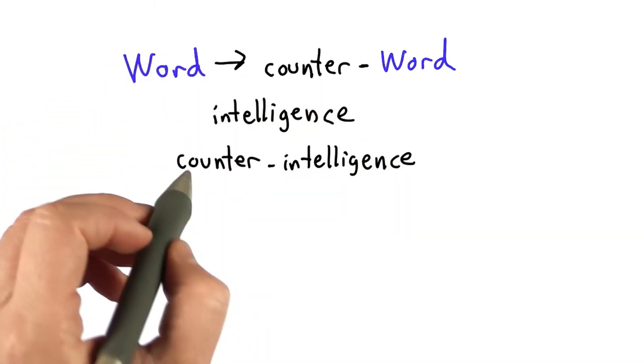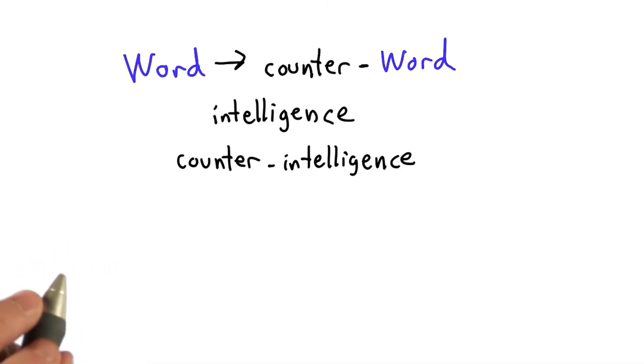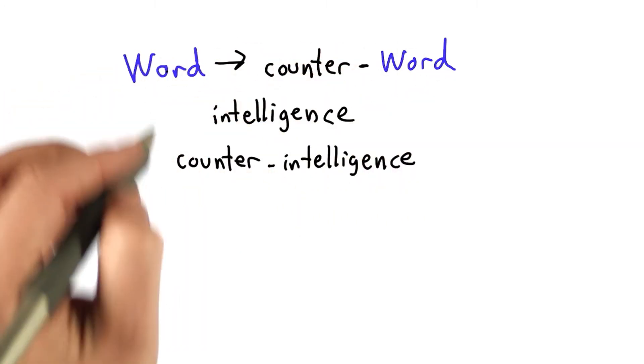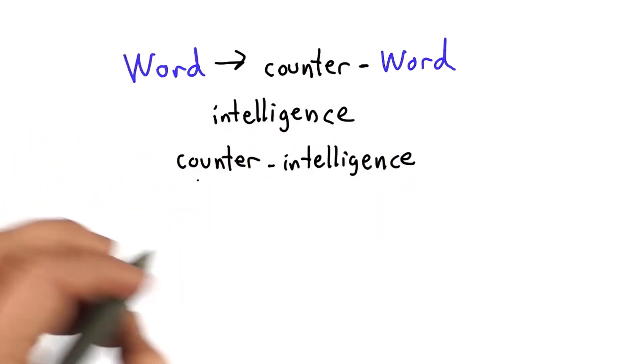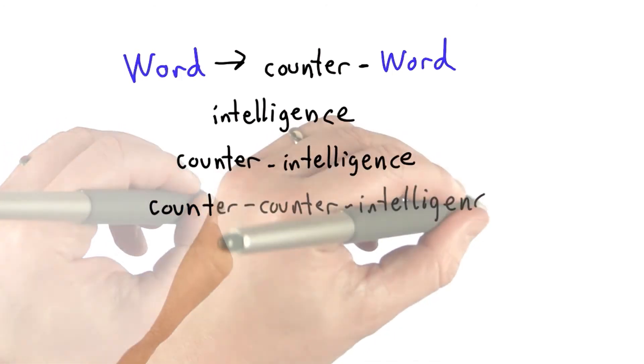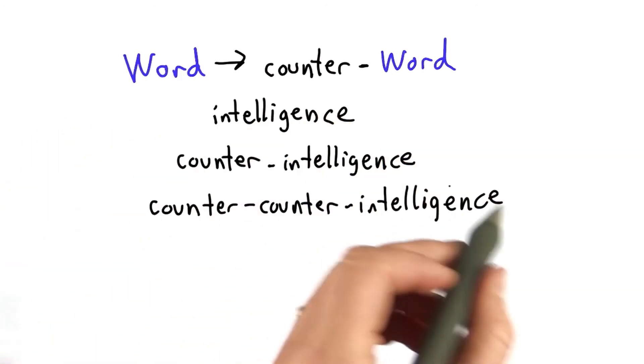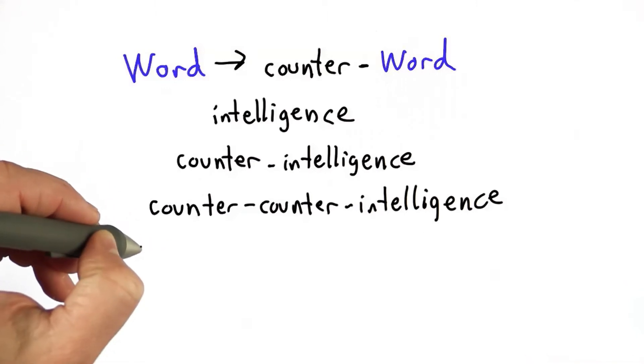We could make the word counterintelligence. Intelligence was a word. We added counter in front of it to make counterintelligence. And that means trying to thwart intelligence from the enemy. We can use the rule again. So now this is a word, and we could replace this word with counter in front of that word. And we get counter-counterintelligence.